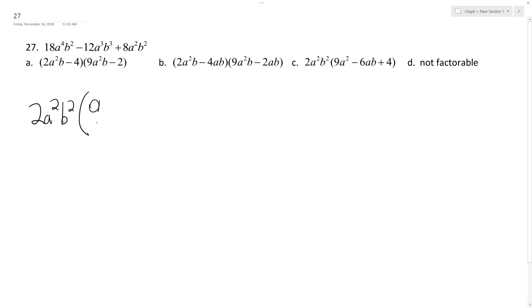So when I do that, I end up with 9a² minus 6ab plus 4a², and no b because the b² was factored out.